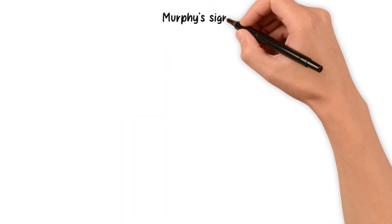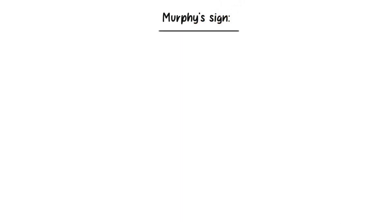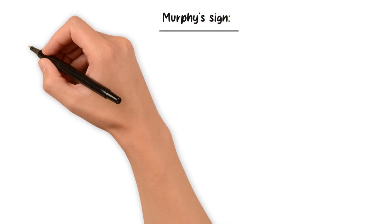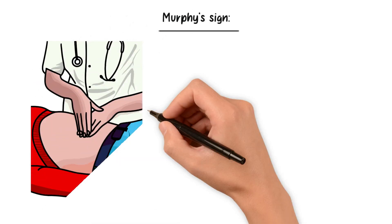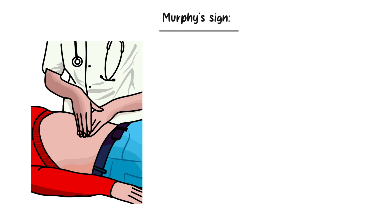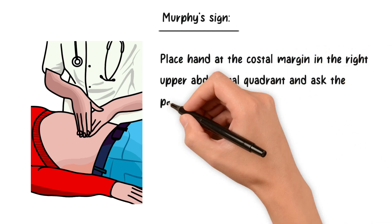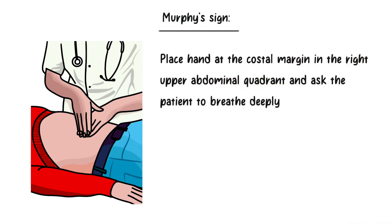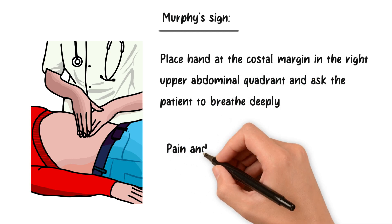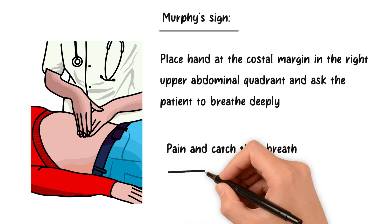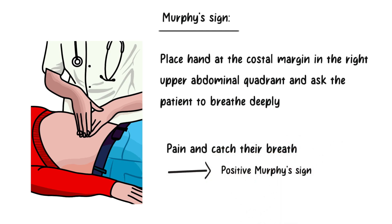Clinical examination reveals a significant finding known as Murphy's sign. A positive Murphy's sign is seen in acute cholecystitis — it refers to where the patient stops breathing due to pain when an examiner touches the inflamed gallbladder. It is elicited by firmly placing a hand at the costal margin in the right upper abdominal quadrant and asking the patient to breathe deeply. If the gallbladder is inflamed, the patient will experience pain and catch their breath as the gallbladder descends and comes in contact with the palpating hand. A similar maneuver in the left upper quadrant should not elicit discomfort.